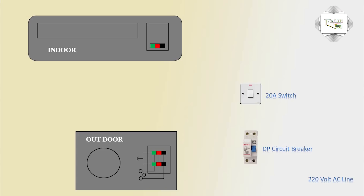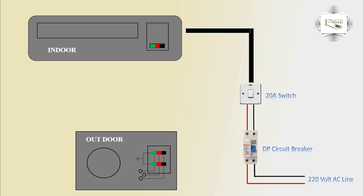24 Volt DC Line, Input DP Connection. DP Outgoing, Switch Connection, Switch Outgoing, Air Condition.